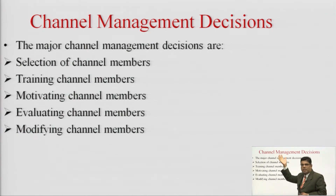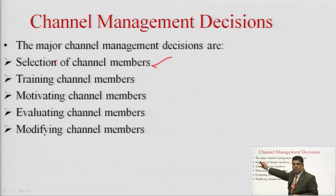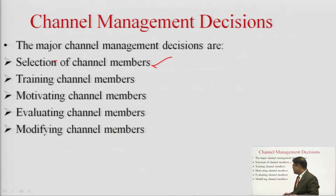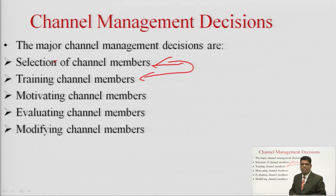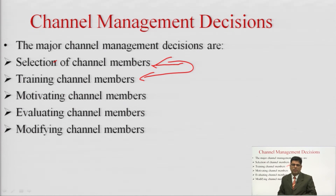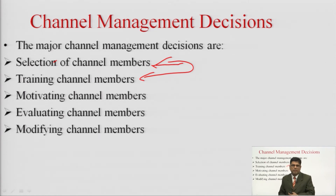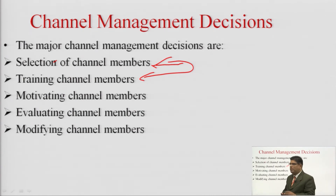The various types of channel management decisions start with selection of channel members — a very important and crucial step, because the success of the channel depends on the type of channel members and how they respond. This is followed by training of channel members. The distributor must be taught about the product, given product knowledge, and knowledge of the types of consumers purchasing the product, so they can efficiently sell it. This knowledge and training about the market, consumer, and product must be given by the organization.